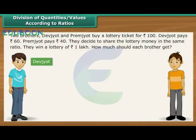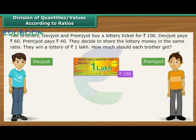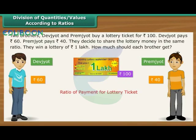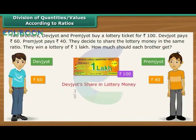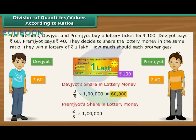Two brothers, Devjodh and Premjodh, buy a lottery ticket for Rs. 100. Devjodh pays Rs. 60 and Premjodh pays Rs. 40. They decide to share the lottery money in the same ratio. They win a lottery of Rs. 1 lakh. The ratio of their payments is 3 is to 2. It means that out of every Rs. 1, Rs. 3 will go to Devjodh and Rs. 2 will go to Premjodh. Devjodh's share is Rs. 60,000 and Premjodh's share is Rs. 40,000.